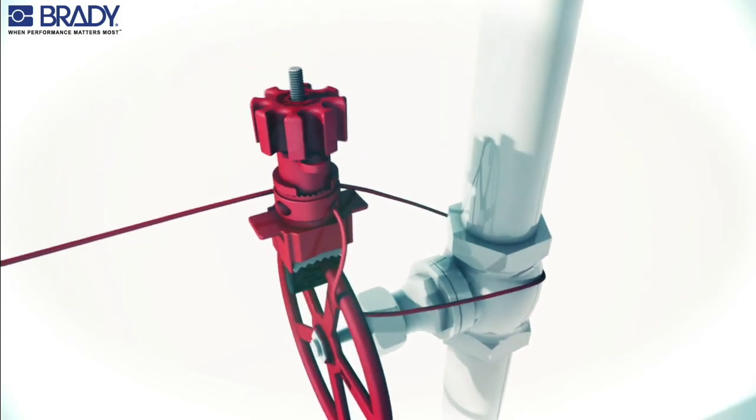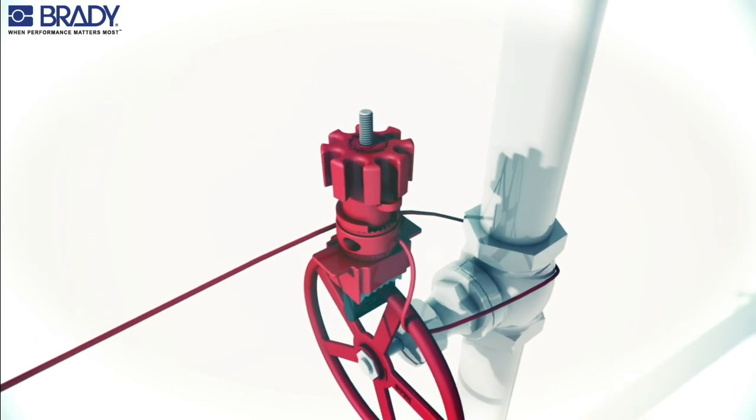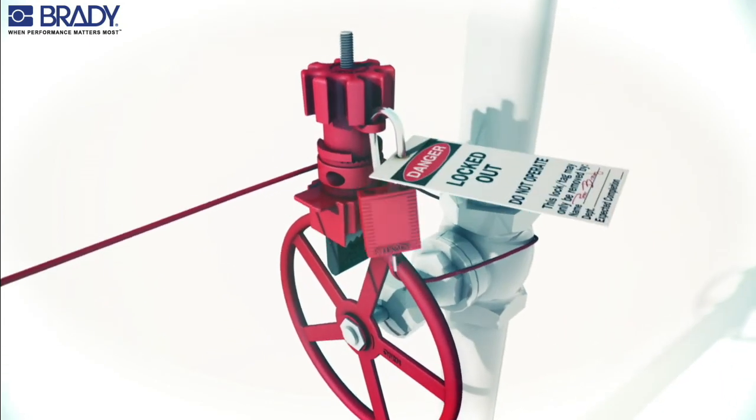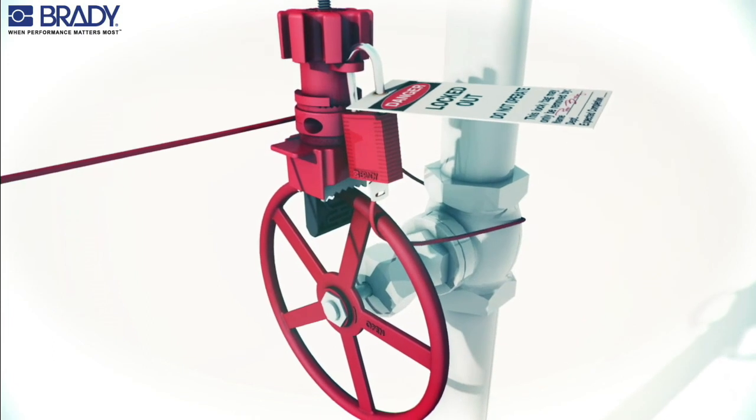Then turn the handwheel clockwise, tightening both the clamp and the cable. Insert the padlock through the locking hole to secure in the locked position.